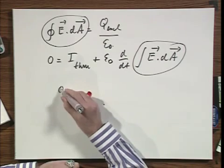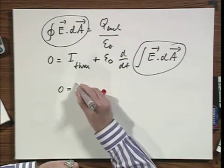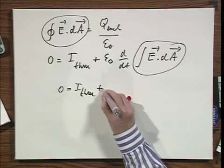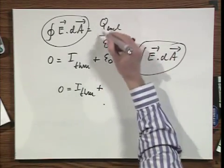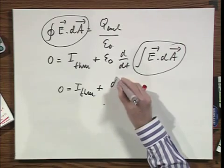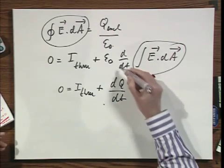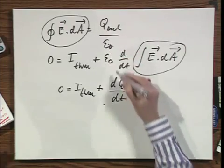And so I now find that zero equals I through plus, I take the derivative, I take the derivative, and so this becomes dQ/dt. I have an epsilon zero here, an epsilon zero here, and so they cancel.